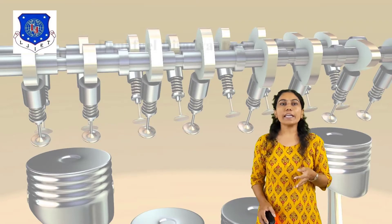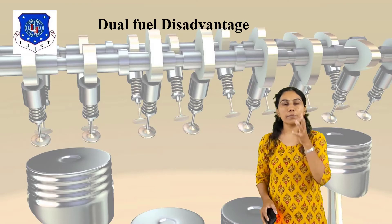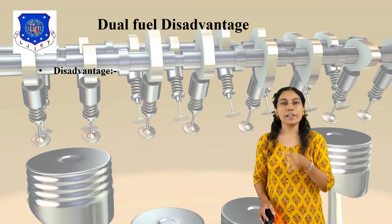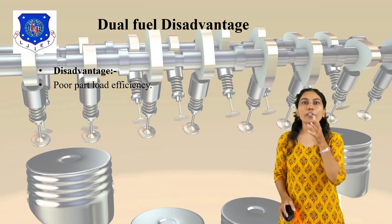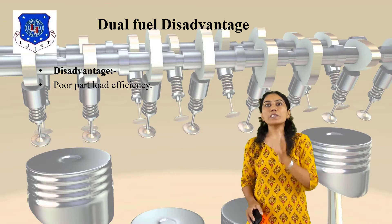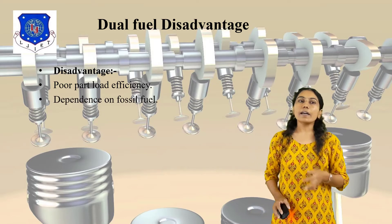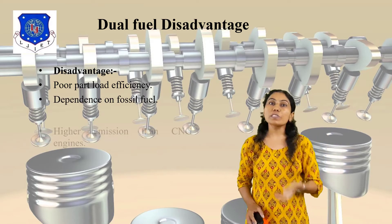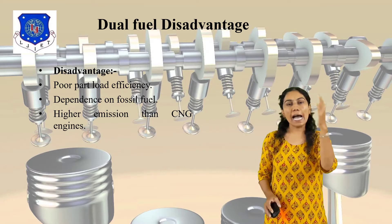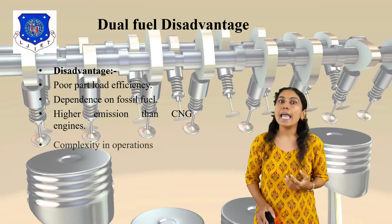Now, what are the disadvantages of the dual fuel engine? The first disadvantage is poor part-load efficiency. The second is dependence on fossil fuel. The third is higher emissions compared to CNG or natural gas.